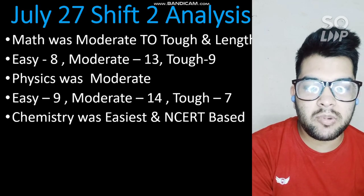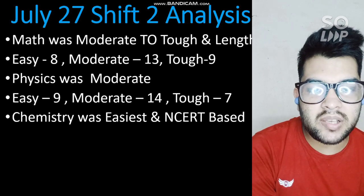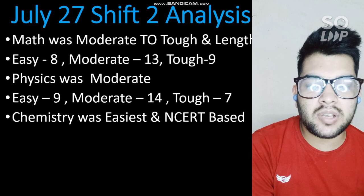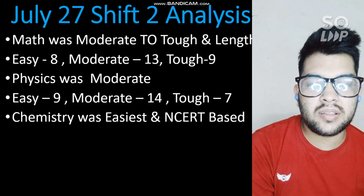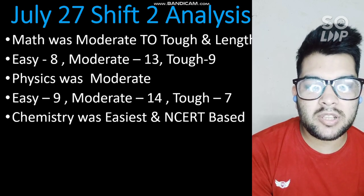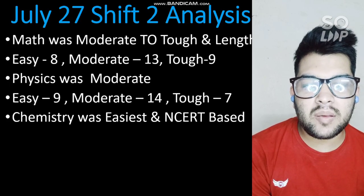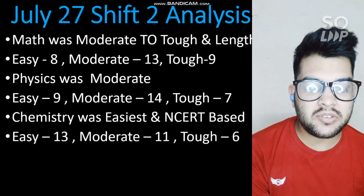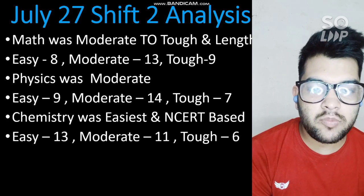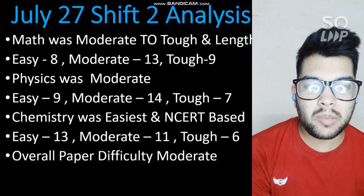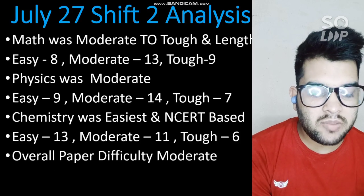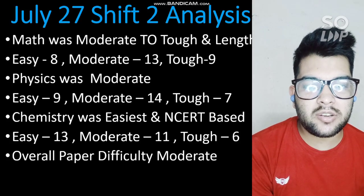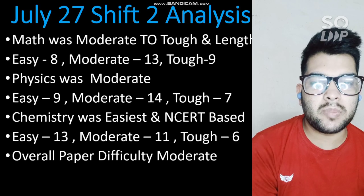In this third attempt of the exam, every shift had similar difficulty levels — there was not much difference across shifts, whether July 20 Shift 1, Shift 2, July 22, or July 25. So you can't expect a big difference in marks versus percentile either. The number of easy questions in Chemistry was 13. Overall, the difficulty level of the July 27 Shift 2 paper was moderate.